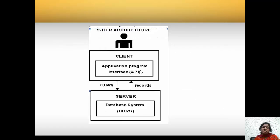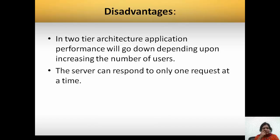In two-tier architecture, the client has the application program interface or API from where he can directly fire queries. The query gets fired to the remote server from which results get retrieved and sent back to the client. However, performance will go down with an increasing number of users because there is only one server handling tremendous load. Multiple clients are giving requests but only one server is there to serve them, and the server can respond to only one request at a time, so response time will be very slow.